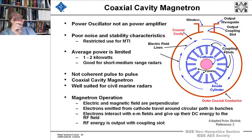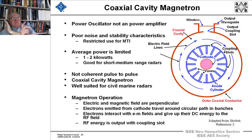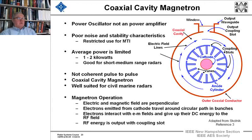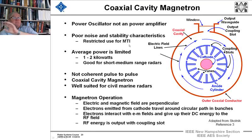One thing you can do is measure the phase difference from pulse to pulse and do some compensating, but it isn't the true coherency from pulse to pulse that you have with coherent systems. Typically, the average power is limited to a kilowatt or two. Because of the poor noise and stability characteristics, they're restricted just for MTI use — not for coherently integrating pulses — but they're well suited for inexpensive marine radars.